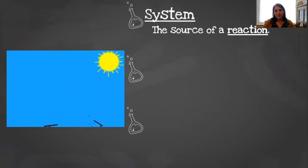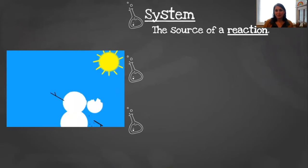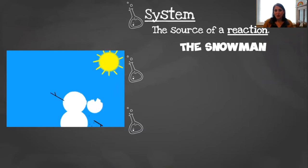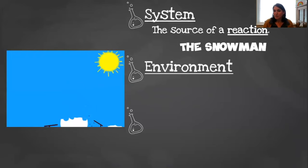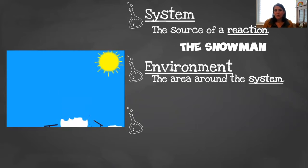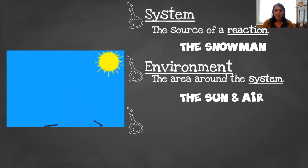The first word is system. System is the source of a reaction, and a reaction is when something is changing. So in this picture of the snowman, what is changing? It's the snowman — so our system is the snowman. The second word is environment. The environment is everything that surrounds the system. So what surrounds the snowman? There's air, there's ground beneath it, and there's the sun — all of that is the environment.